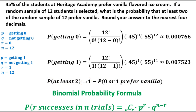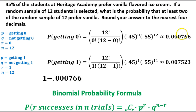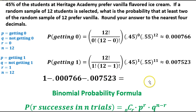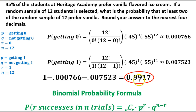Now we calculate the probability of at least 2: 1 minus 0.000766 minus 0.007523 equals 0.9917, rounded to four decimals. So there is a 99% chance that at least two students will say they prefer vanilla, which makes sense — 45% of 12 students would be much higher than 2, so it's very likely you'll get at least 2.